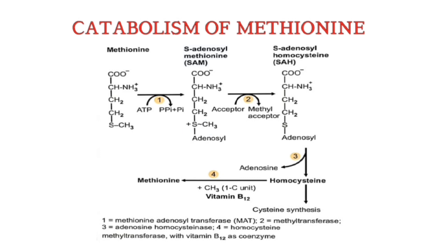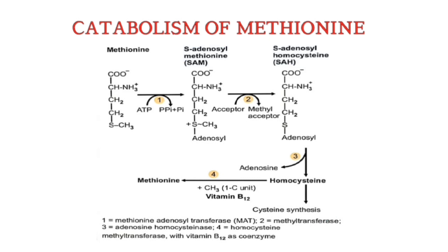Following the donation of its methyl group to an acceptor, S-adenosylmethionine is converted to S-adenosylhomocysteine, which is carried out by the enzyme methyltransferase. The next step involves the removal of the adenosyl group from S-adenosylhomocysteine, leading to the formation of homocysteine. The enzyme involved is adenosyl homocysteinase.